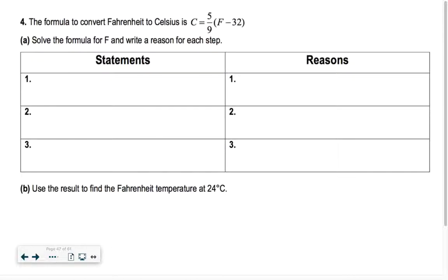So the formula used to convert Fahrenheit to Celsius is C equals 5 ninths times F minus 32. So solve the formula for F and write a reason for each step. So I'm going to have 5 ninths, F minus 32. So that was what was given to us. And we're going to do one thing at a time until we get the F by itself.